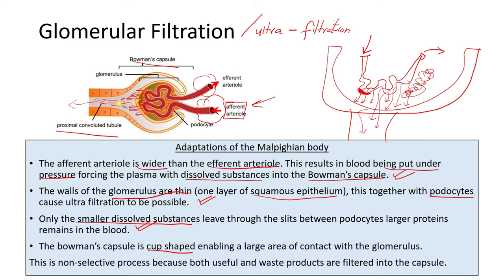Since there is filtration of the blood at the glomerulus, because the Bowman's capsule is cup-shaped, it enables enough space and a large area of contact with the glomerulus, so that the smaller dissolved waste products can leave the blood.